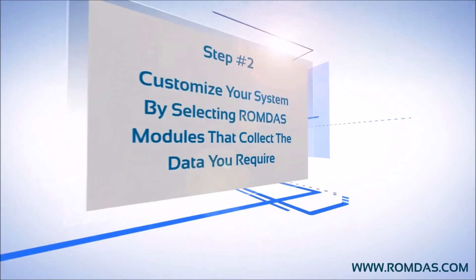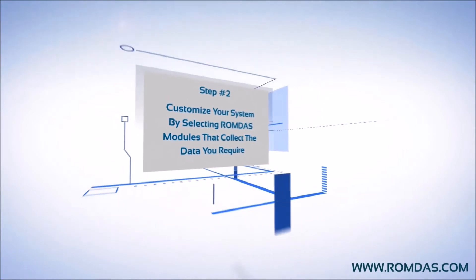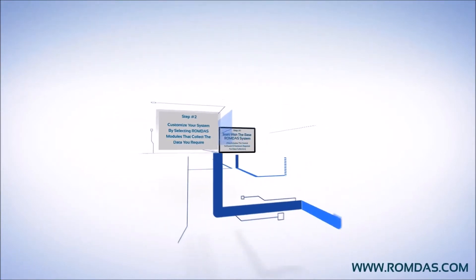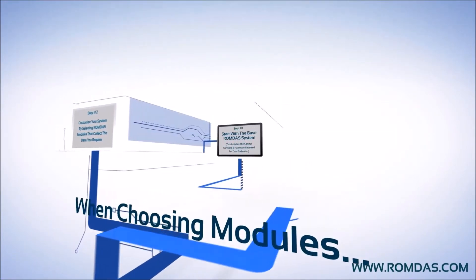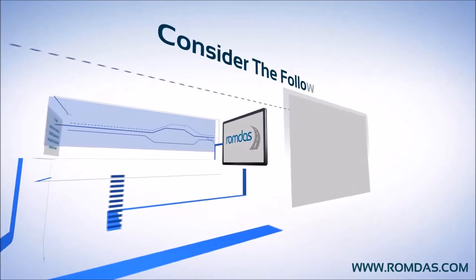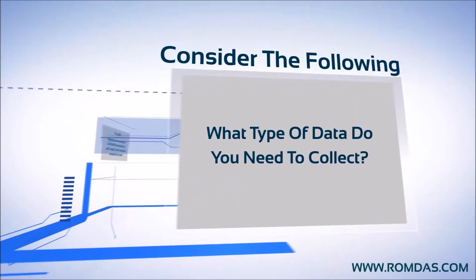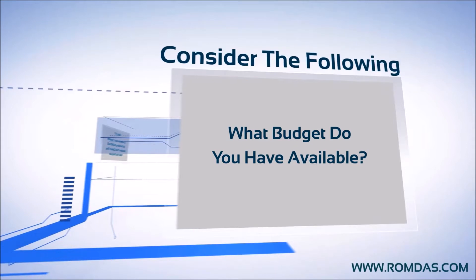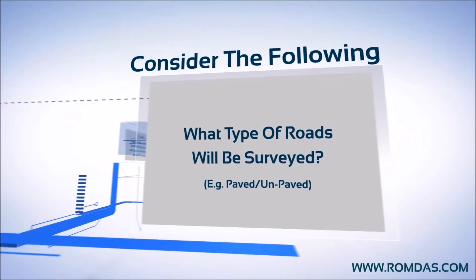Step 2: you will then need to add-on ROMDIS modules that collect the data you require. When choosing your add-on modules, consider these key points: What type of data do you need to collect? What is your budget for this system? And what are the road conditions where you'll be surveying?